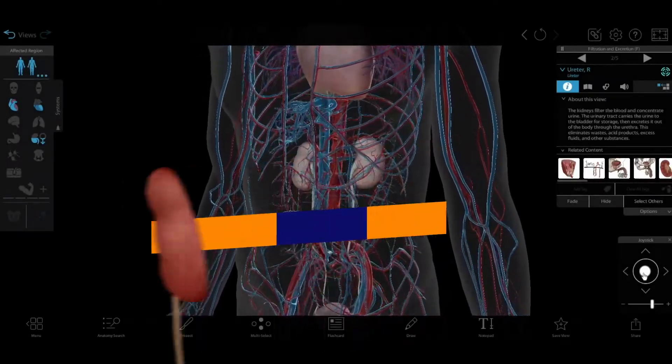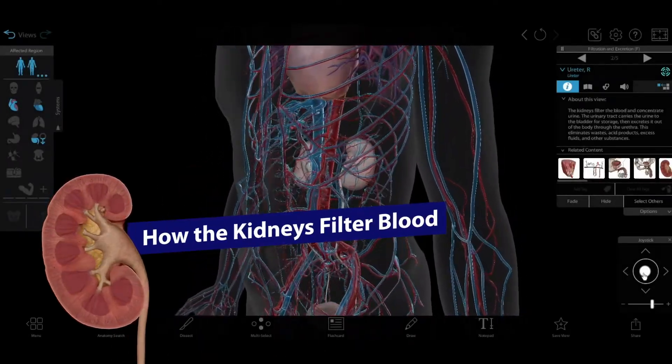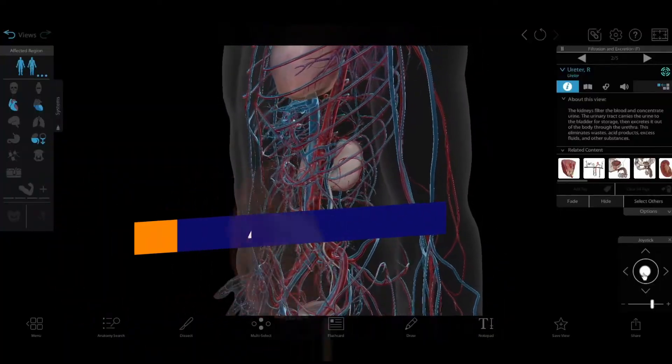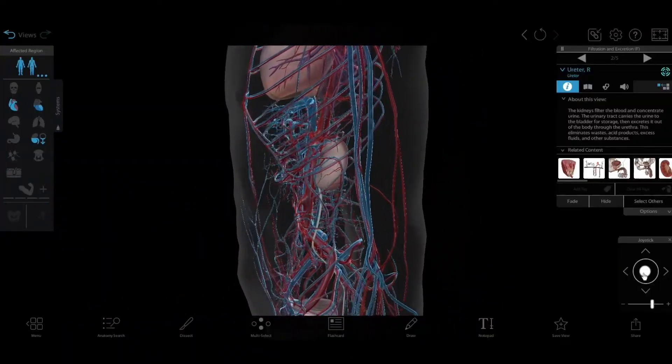The kidneys play a vital role in the body, filtering waste products from the blood to form urine. Let's follow the path of blood through the kidneys.